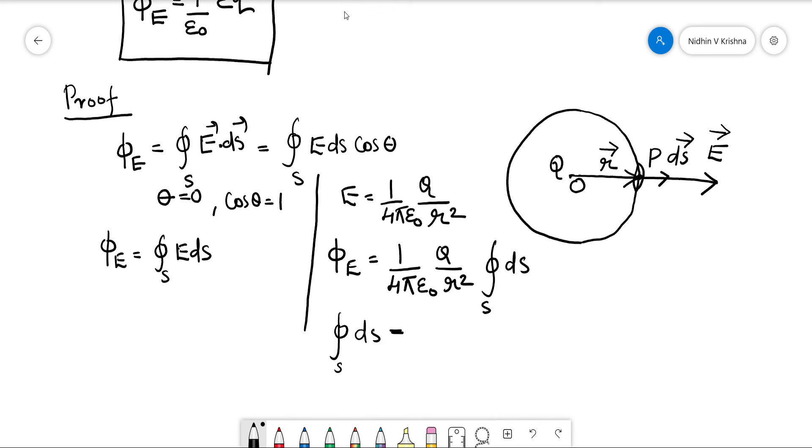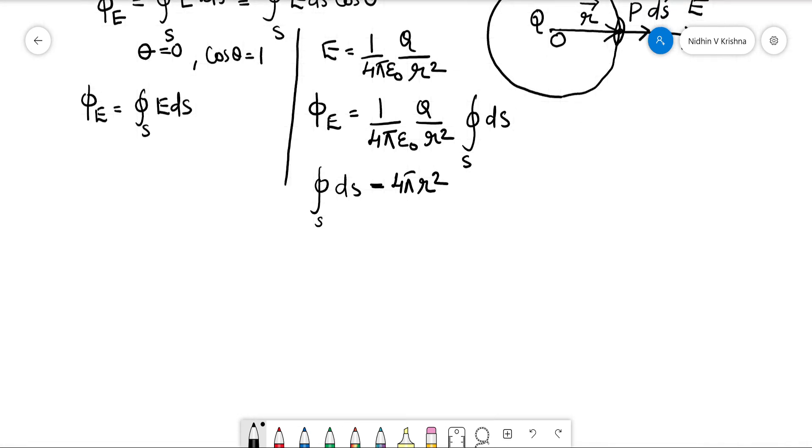When we integrate this, what we'll get is that will be the surface area of this sphere. Surface area of the sphere in the given case, what will it be? It will be 4π, 4πr². Clear. So when we substitute this fact in the above expression, we're going to get the result like this.